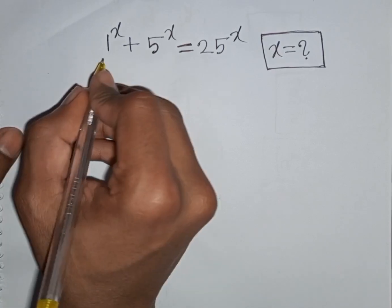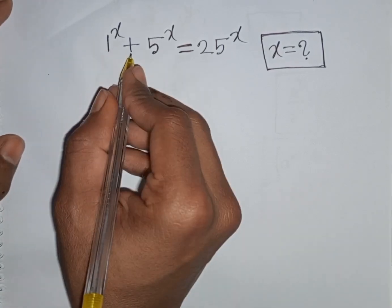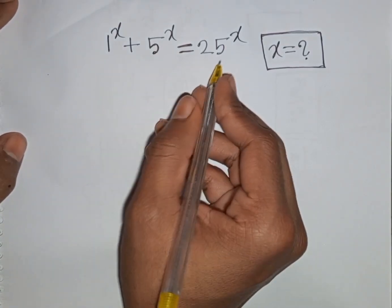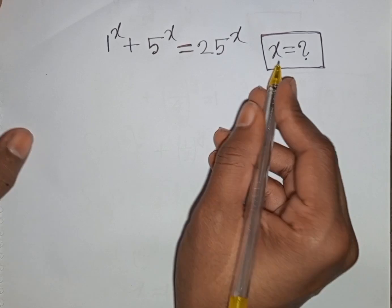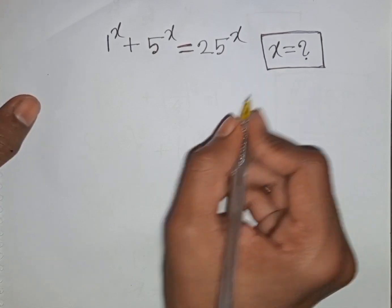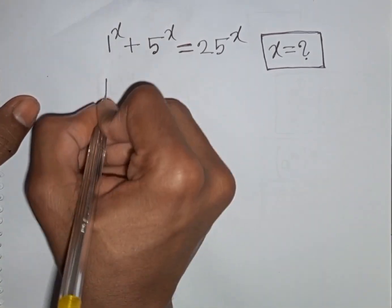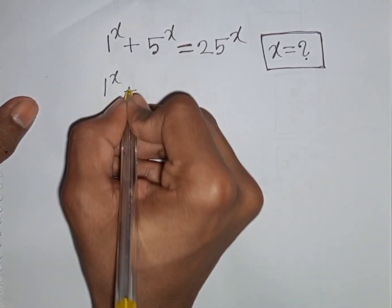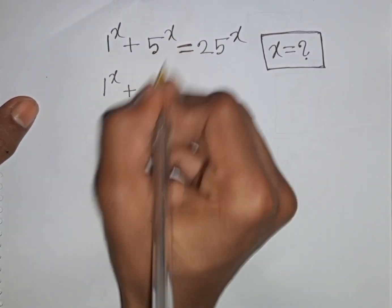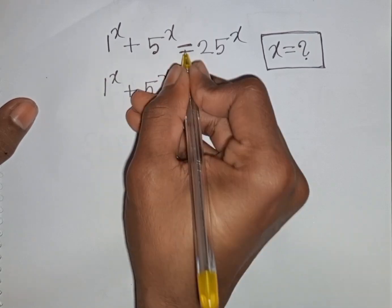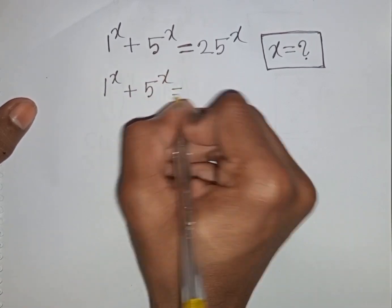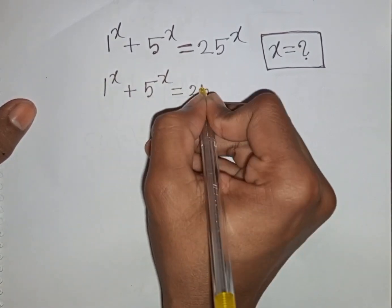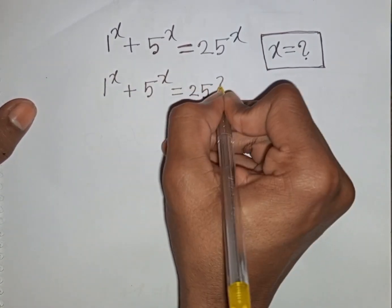How to solve 1 power x plus 5 power x is equal to 25 power x. Find the value of x. We have 1 power x plus 5 power x is equal to 25 power x.